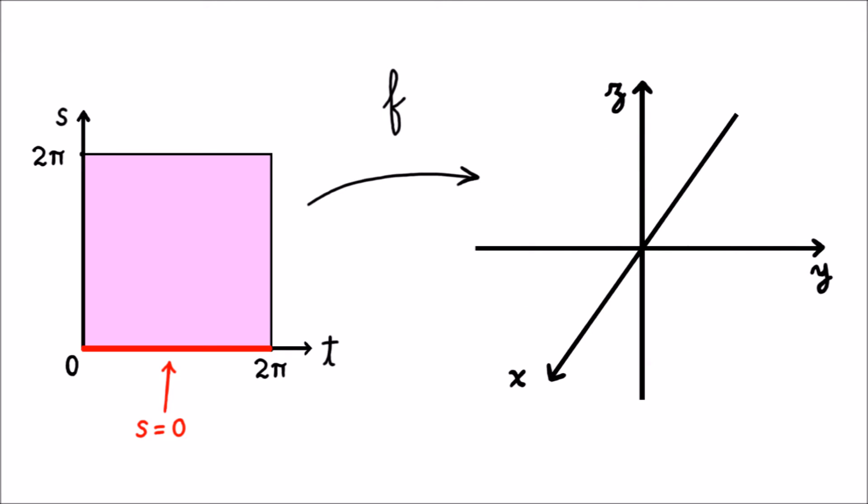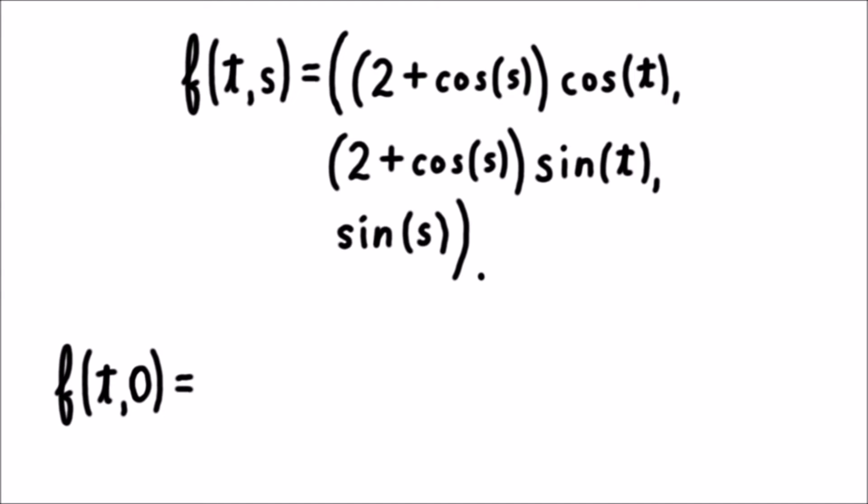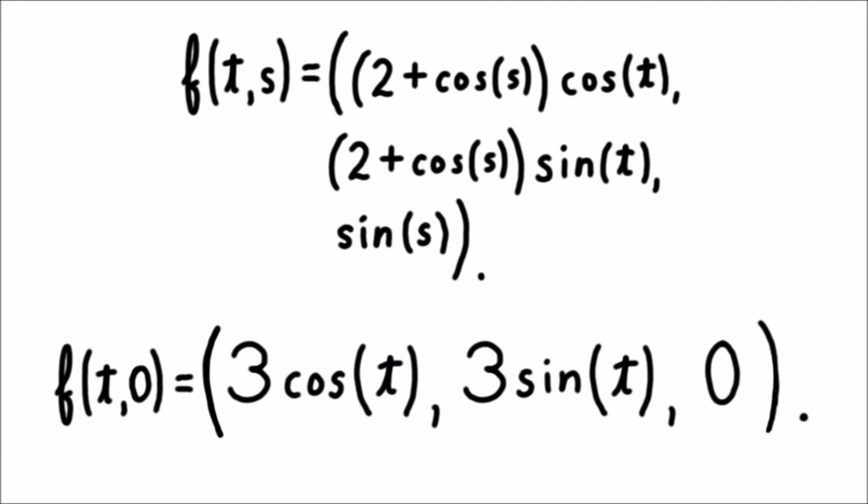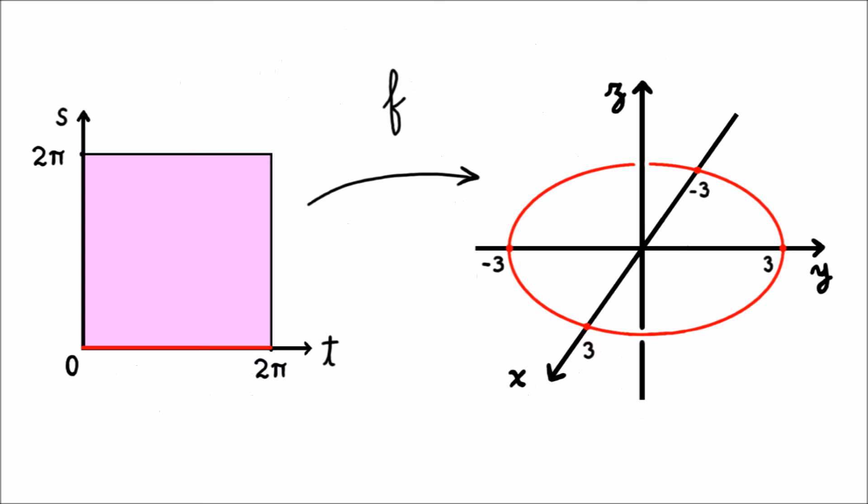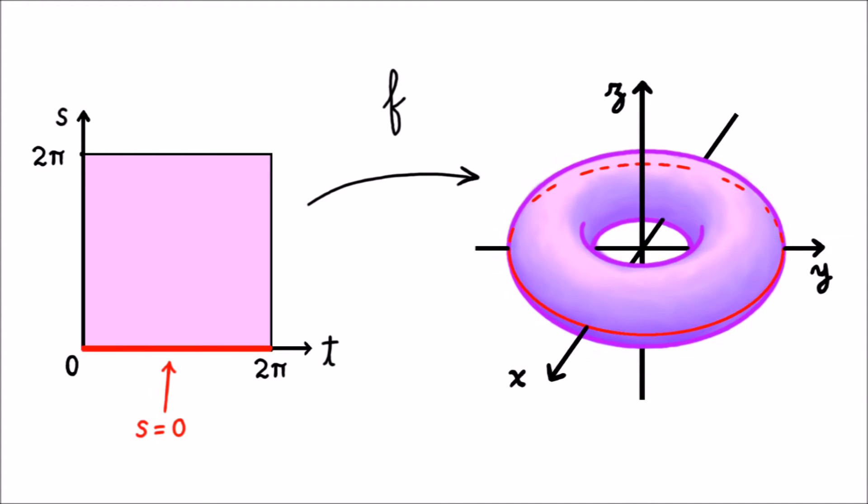First, let's look at what it's doing to the horizontal line s = 0. If we set s equal to 0, then the function becomes (3 cos t, 3 sin t, 0). As t varies from 0 to 2π, this traces out a circle of radius 3 in the xy-plane. This is the big circle carving around the torus as far from the hole as possible.